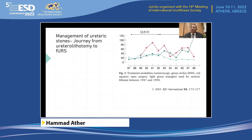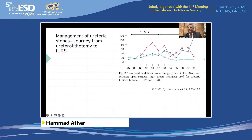We did realize that not all ureteral stones can be effectively treated by lithotripsy. At that time we had a 13.5 French ureteroscope only. Subsequently from 1992 onwards we acquired 8 French ureteroscopes, and you can see a little surge in ureteroscopies performed. When we finally had a 6 French semi-rigid ureteroscope, the number of ureteroscopies started to increase and the number of lithotripsy procedures started to fall.